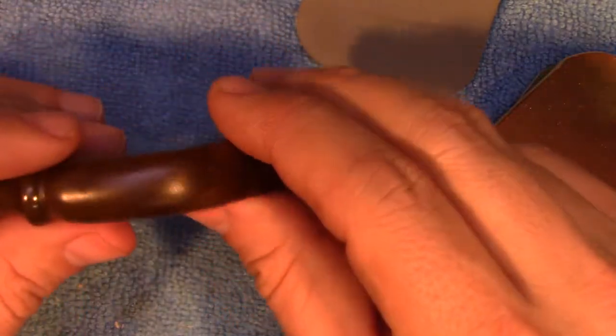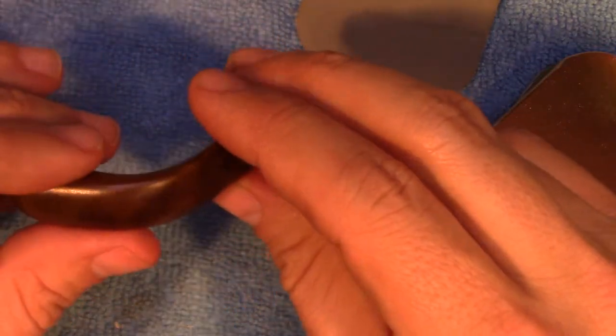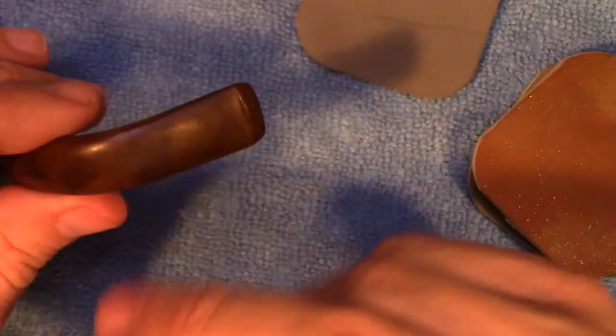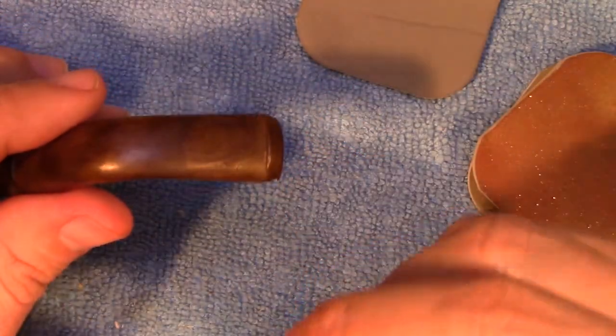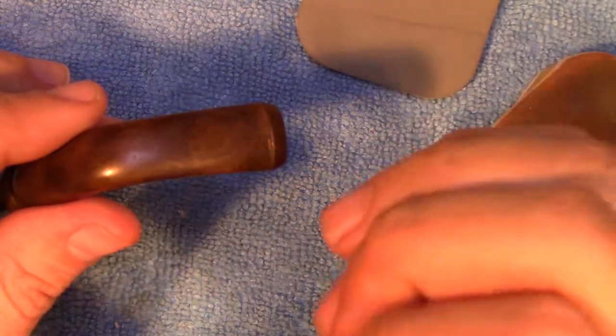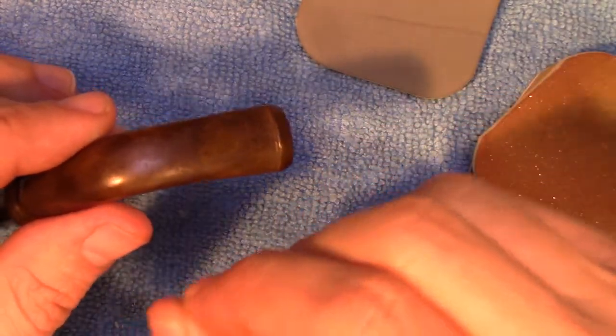So I'd probably start with something like a 400 grit wet-dry sandpaper and then move into the micro-mesh pads. However, I've had the experience with several stems like this where if you go through that process, you have a black stem that looks pretty good, and then as soon as it gets wet, it oxidizes again.